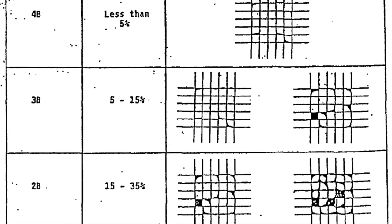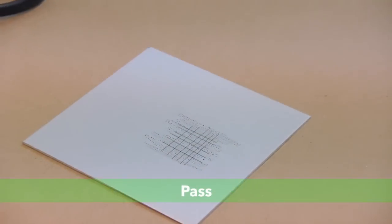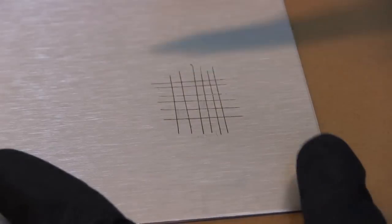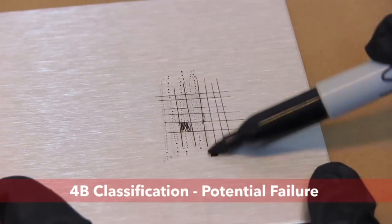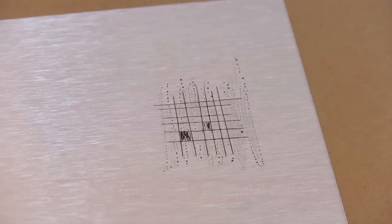Compare the test pattern on the item being tested to the chart shown and rate the adhesion. A properly coated and cured item should yield a 5B rating. Some substrates may need a pre-treatment to attain a 5B adhesion. This is detailed in the preparation and coating instructions.